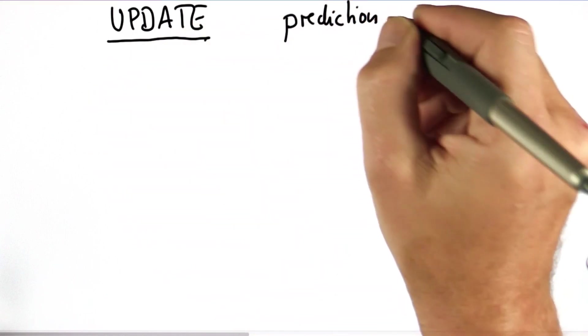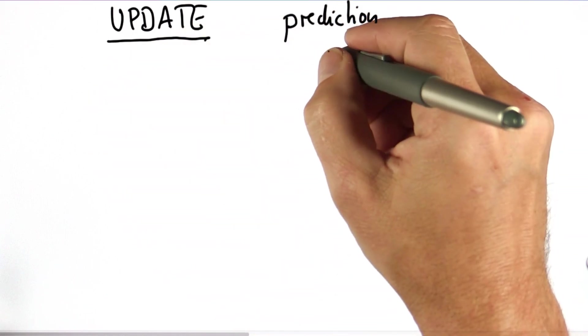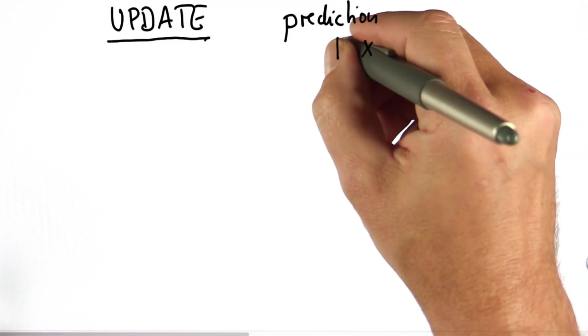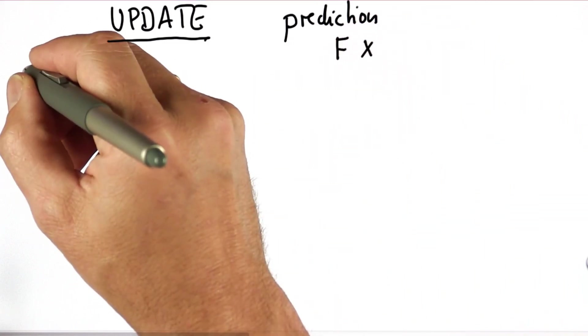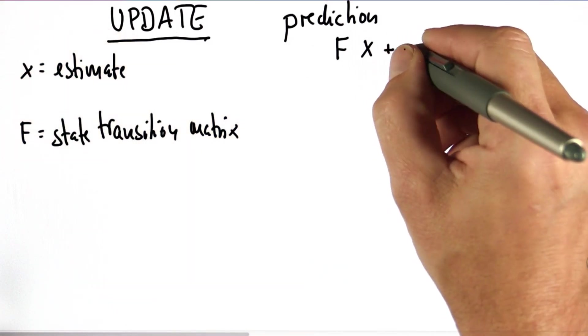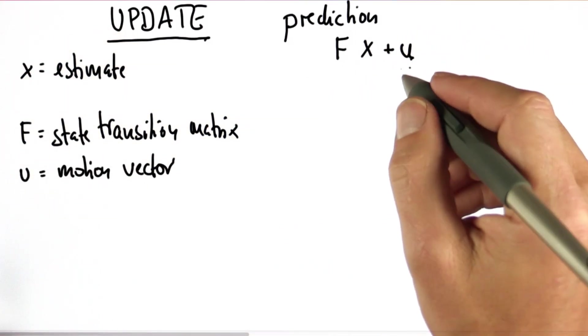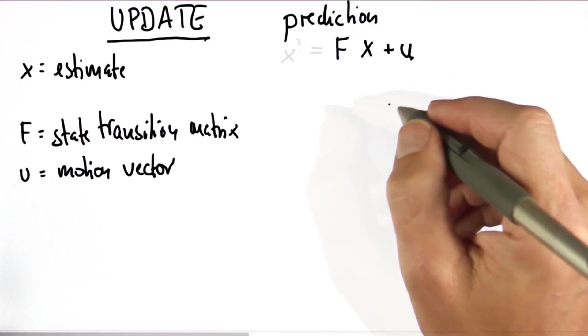There's a prediction step where I take my best estimate x, multiply it with the state transition matrix, matrix F, and I add whatever motion I know, u. That gives me my new x.